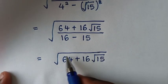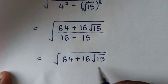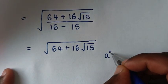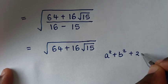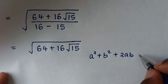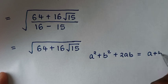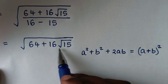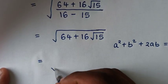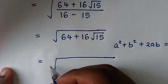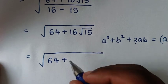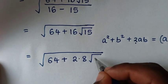So, here under the square root we will apply a perfect square rule, to expand in the form of a squared plus b squared plus 2ab, which is the expansion of (a plus b) squared. We will apply this form here. Now, 16 is the same as 2 times 8, so 16 square root of 15 becomes 2 times 8 times square root of 15.